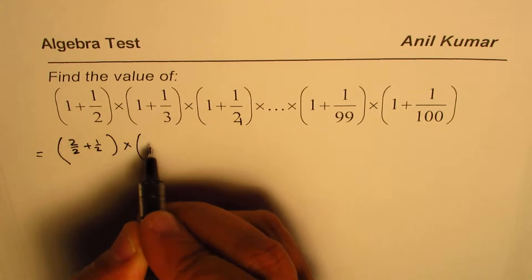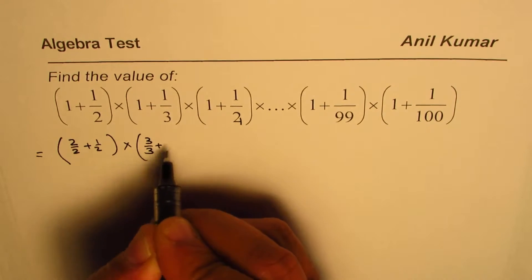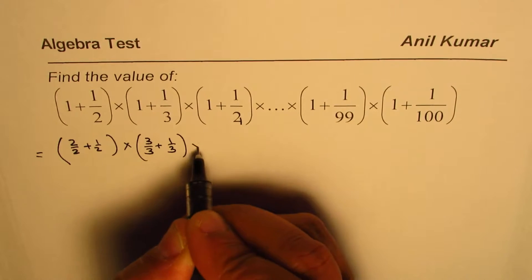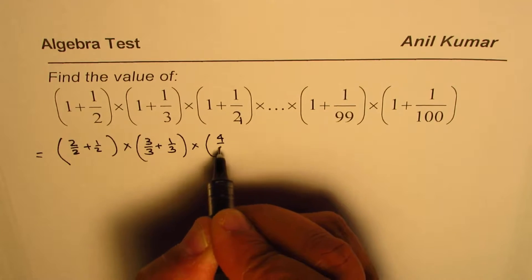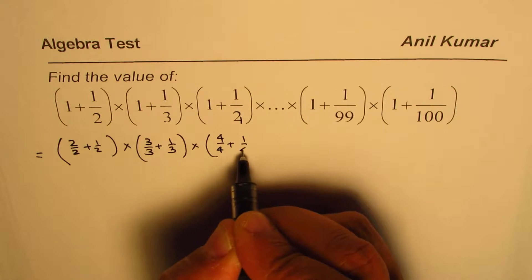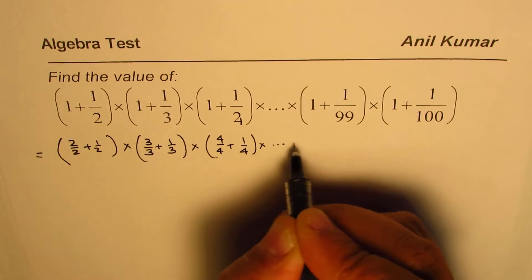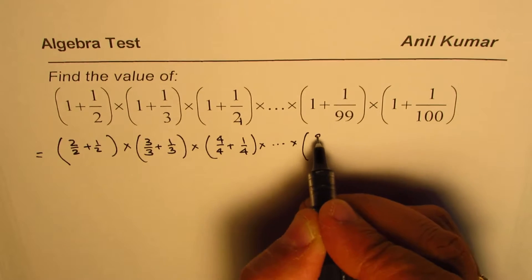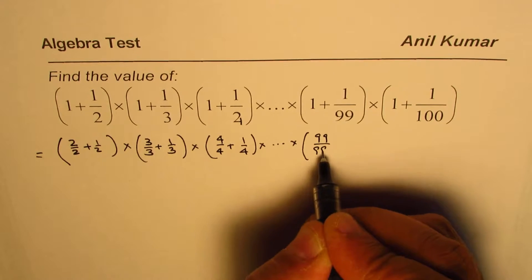And then we could write one as three over three, right? Three over three plus one over three, times four over four plus one over four, and so on. And here we can write ninety-nine over ninety-nine plus one over ninety-nine.